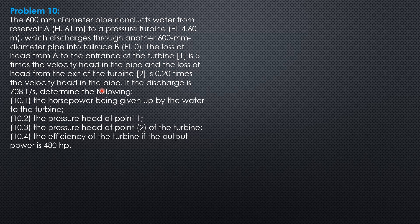If the discharge is 708 liters per second, determine the following: the horsepower being given up by the water to the turbine — this is the head extracted by the turbine — the pressure head at 0.1, the pressure head at 0.2 of the turbine, and the efficiency of the turbine if the output power is 480 horsepower.